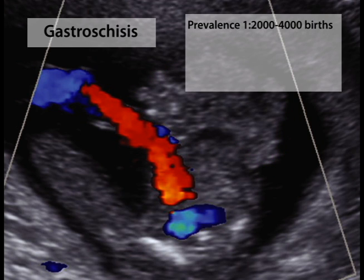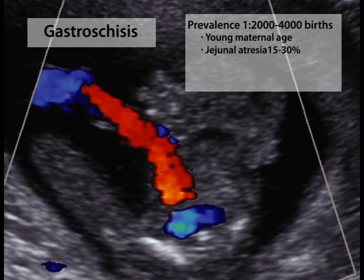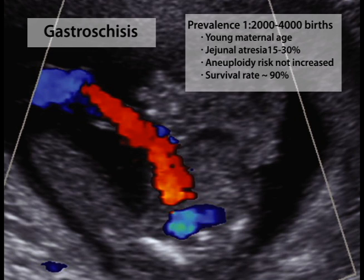Gastroschisis complicates one in 2,000 to 4,000 pregnancies and is the one major anomaly more common in infants of younger mothers. Associated bowel abnormalities such as duodenal atresia are found in 15 to 30% of cases. As with other major anomalies, targeted sonography is indicated. Gastroschisis is not associated with an increased aneuploidy risk and the survival rate approximates 90%.